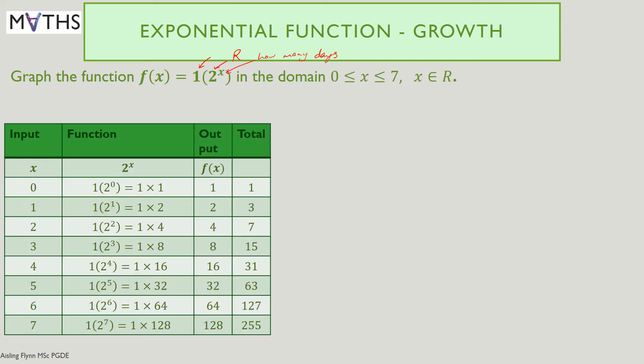Here I've made a table with my input starting from day 0. This is what day it is: day 0, day 1, 2, 3, 4, down to 7. And here is my function. Above, we had 1 times 2 to the power of x. Well, of course, 1 times anything is itself.